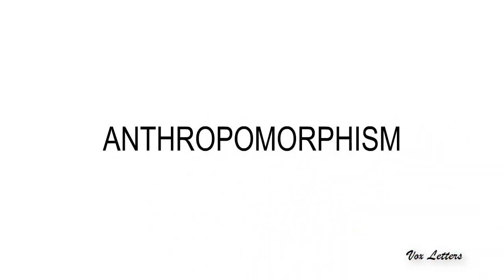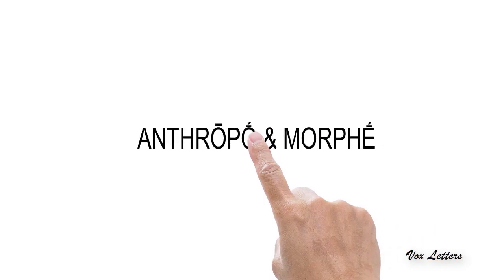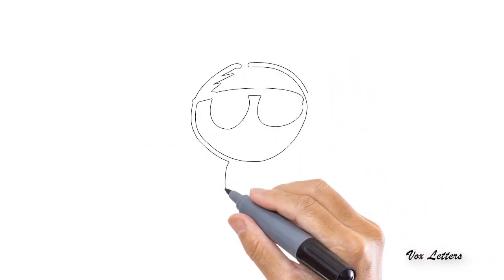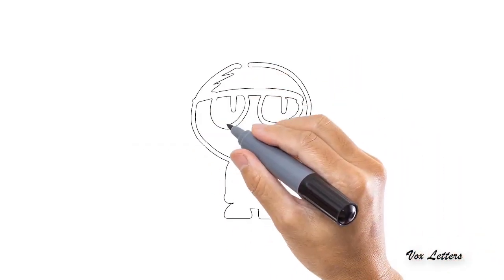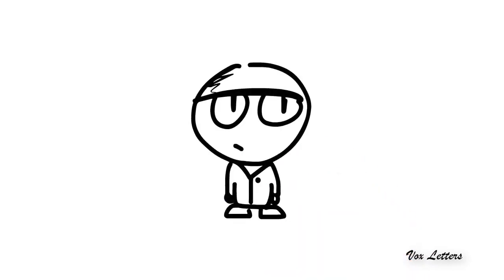The term anthropomorphism is a combination of two Greek words, anthropo and morphe. The word anthropo means a human being, while morphe stands for shape. Etymologically, it means human shape or human form, while in literature it implies attributing human traits to inanimate objects, animals, deities, and gods.